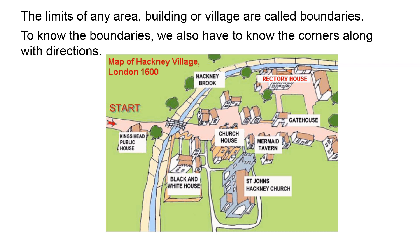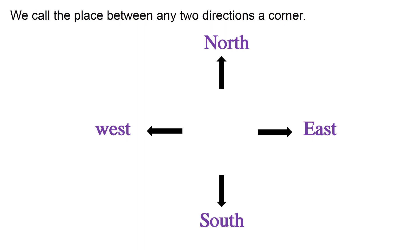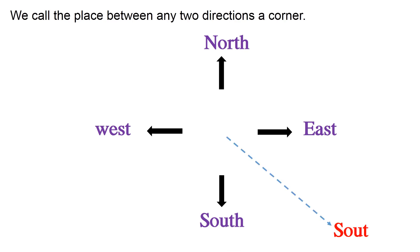What are corners? We call the place between any two directions a corner. Here you observe East and South are two directions. In the middle of those two directions, one location is there — that corner is South-East. Between East and South, there is a corner that is South-East.